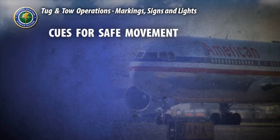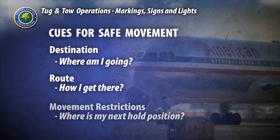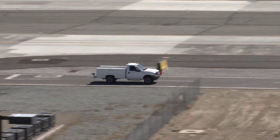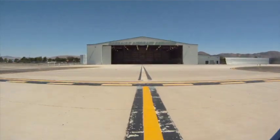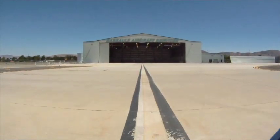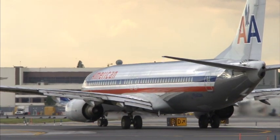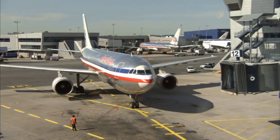Markings, signs, and lights provide three critical clues for safe ground movement: your destination, your route, and any movement restrictions you will encounter. There are markings and signs to indicate ground travel lanes, aircraft movement and non-movement areas, runway and taxiway identifiers, traffic control signs, and safe area indicators.